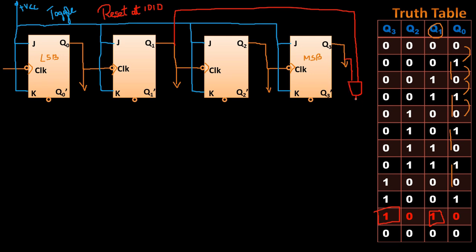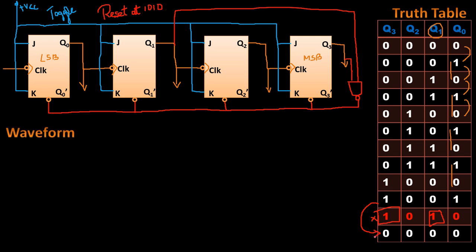Our reset is active low — whenever we give a 0 to the clear input, the output resets to 0. So we feed Q1 and Q3 as inputs to a NAND gate, and the output of the NAND gate is given as the clear input to all the flip-flops. The NAND gate produces a 0 only when both Q1 and Q3 are 1; otherwise its output is 1, ensuring normal operation. So whenever the counter reaches 1010, it resets to 0 because of the NAND gate added to the mod 16 counter.